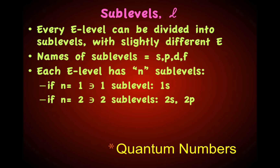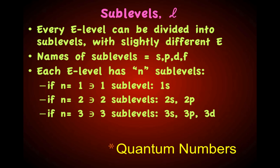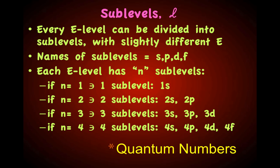In the third energy level, when n equals 3, there exist three sublevels: 3S, 3P, and 3D. When n equals 4, or you're in the fourth energy level, there exist four sublevels: 4S, 4P, 4D, and 4F.